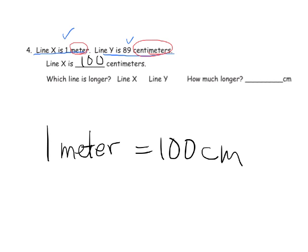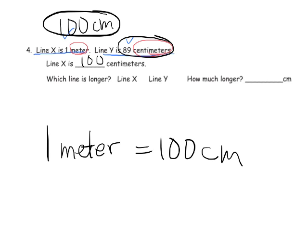So now the question is, which line is longer? Now it's easy for us to see that 100 centimeters versus 89 centimeters, it's easy to see that line X is longer. Now the tricky thing is, how much longer? Well, this is where we could use subtraction if we want. We could do 100 minus 89 and do the math and we would get 11.